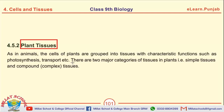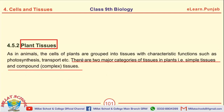The first question is: how many categories of plant tissues are there? There are two major categories of plant tissues — one is simple and the other is compound tissue.